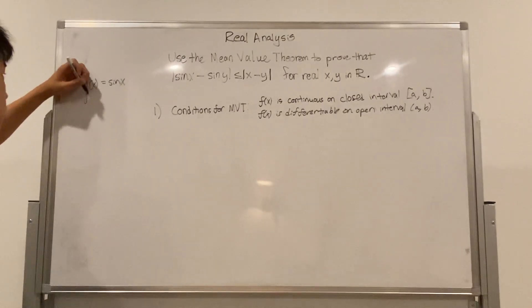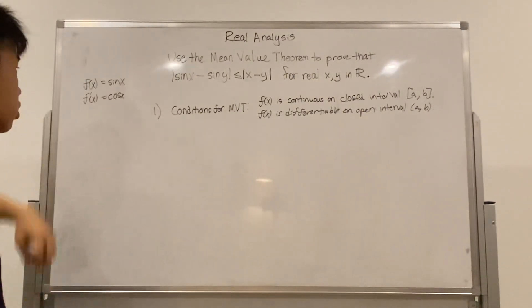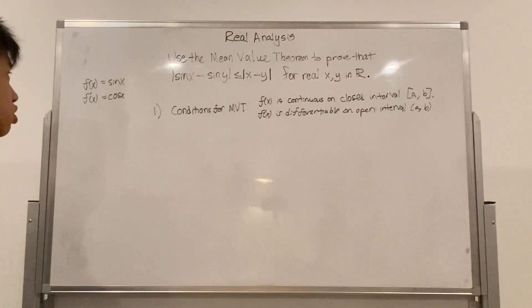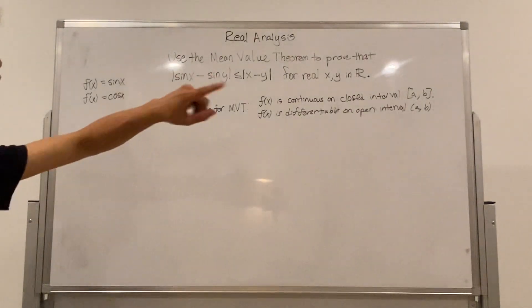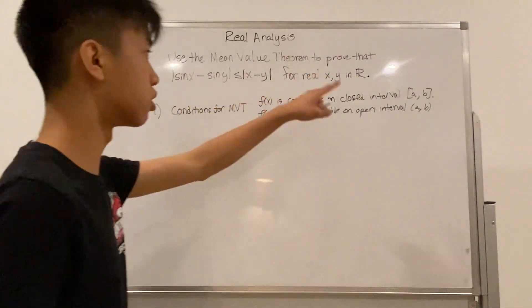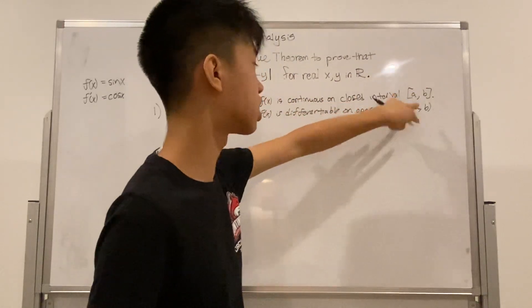And its derivative, f prime or cosine of x, similarly is continuous everywhere, does not have any discontinuities. So therefore f of x is both continuous and differentiable for all real numbers.